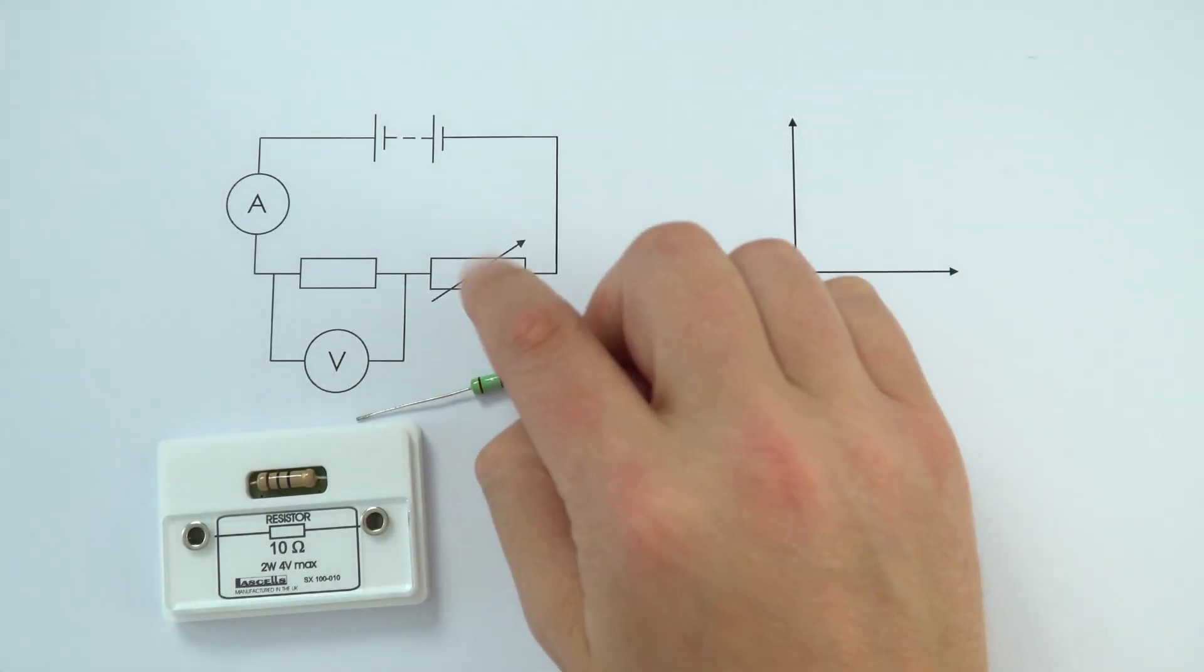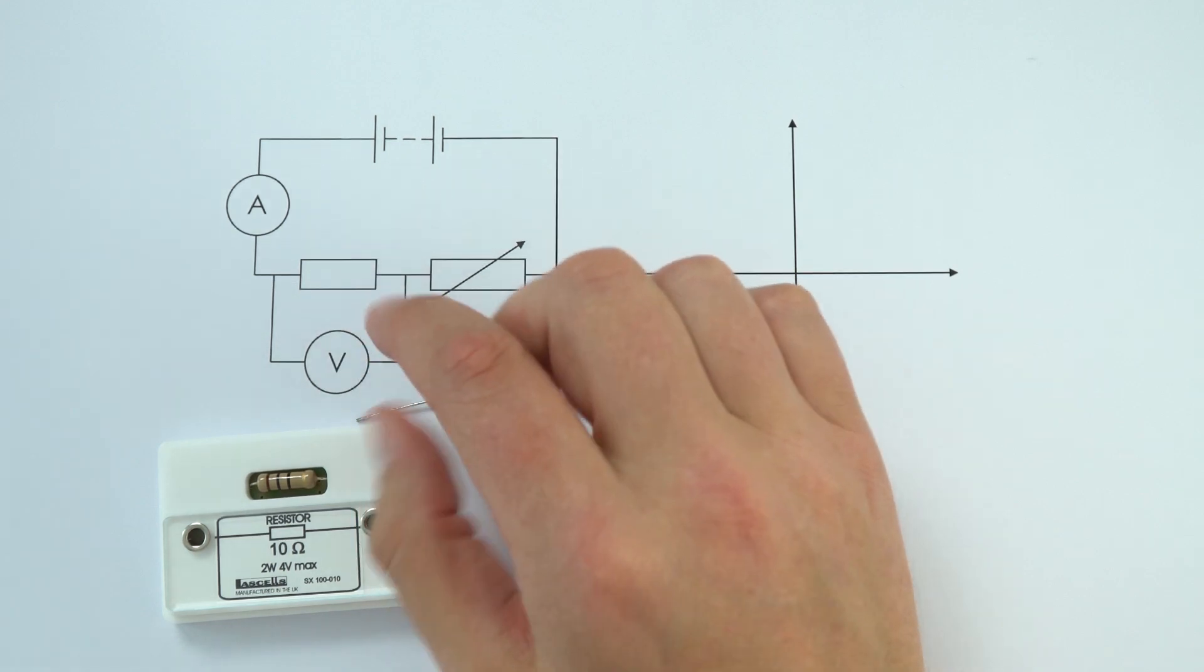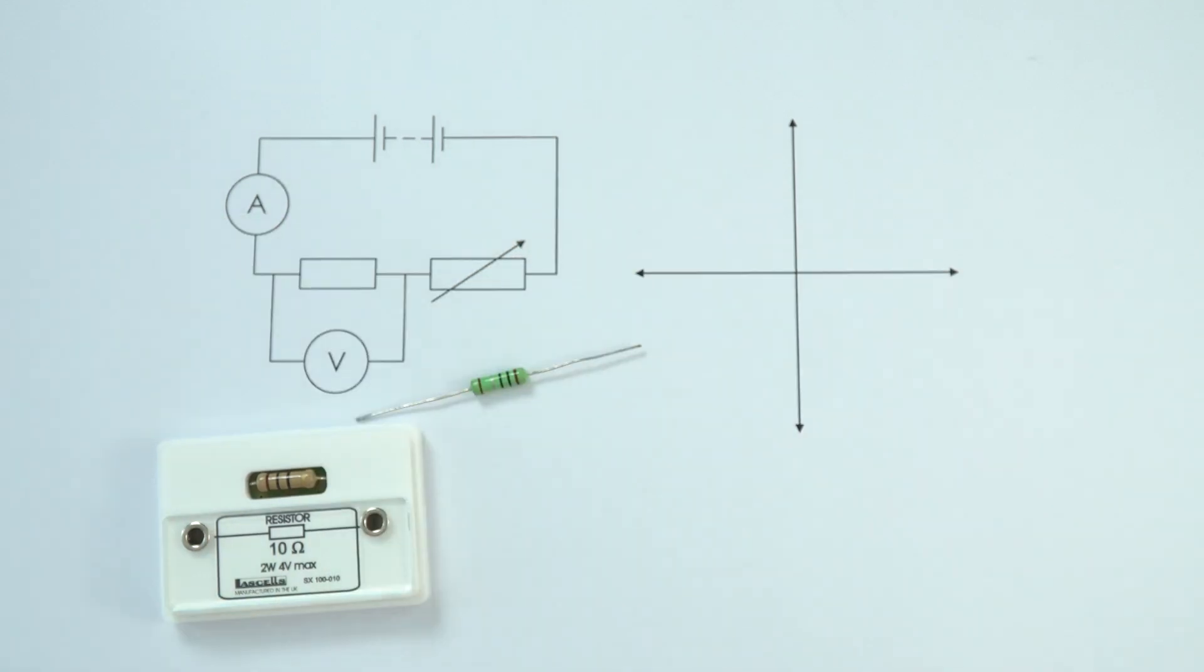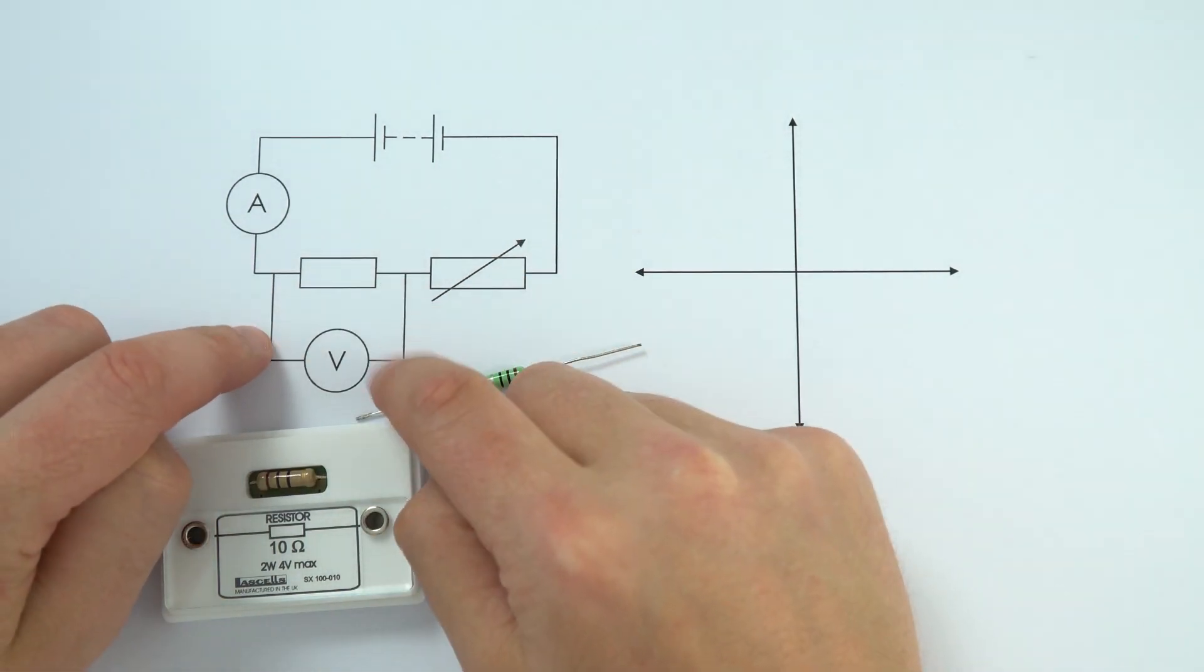We can set up a resistor in a circuit like this to look at its behavior when you have different values of potential difference and current. We've got a resistor here with a voltmeter in parallel across it to measure the potential difference.